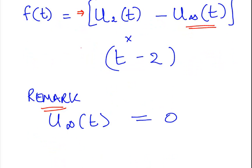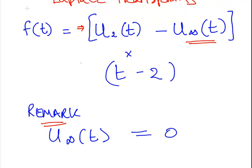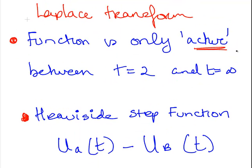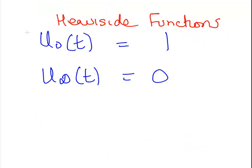Just as a sort of quick remark actually, something I'm just going to repeat, u of infinity is zero. So that is going to go to zero there. Here I go again, Heaviside function. It is only active between points t equals 2 and t equals infinity. So we use the Heaviside step function. Multiply your main function by this, where a is the starting point, b is the finishing point of the function. Here it's 2 and infinity. Just as a couple of remarks, u of zero is 1 and u of infinity is 0.